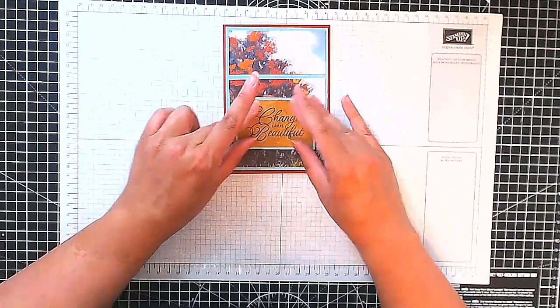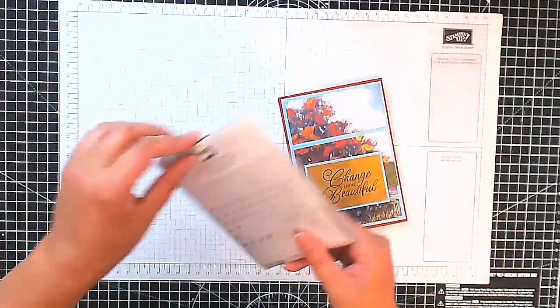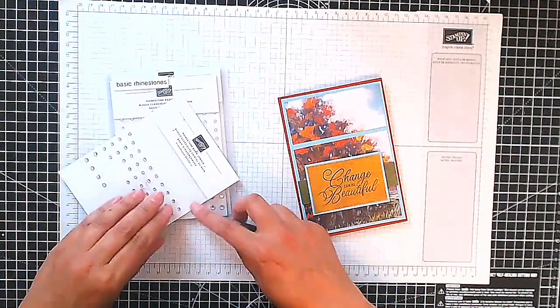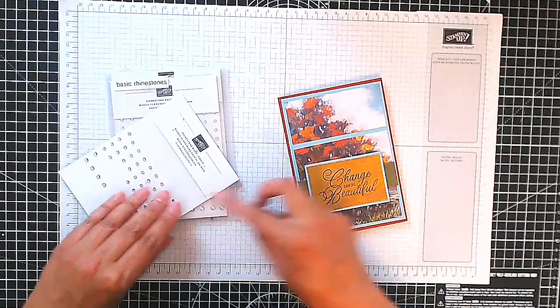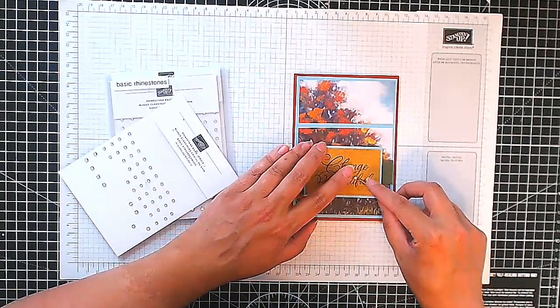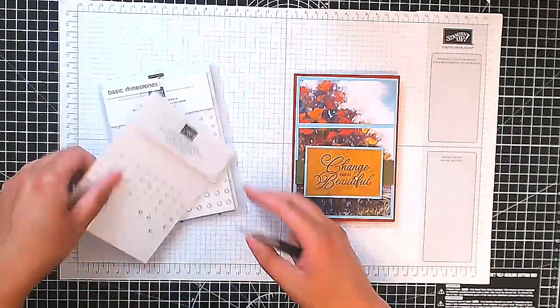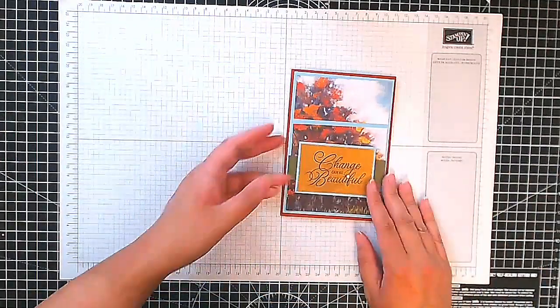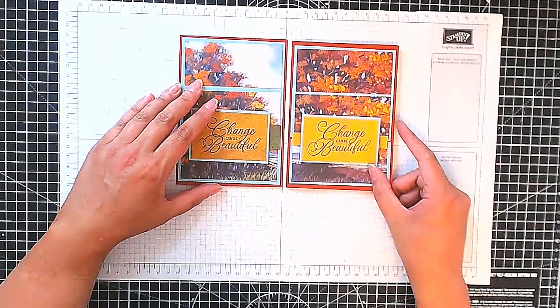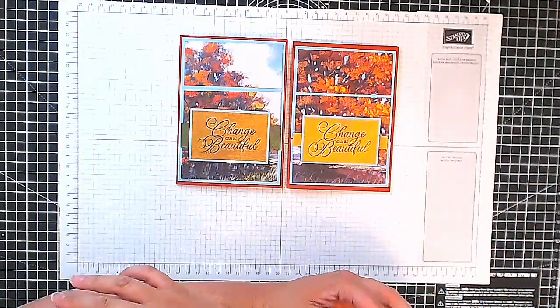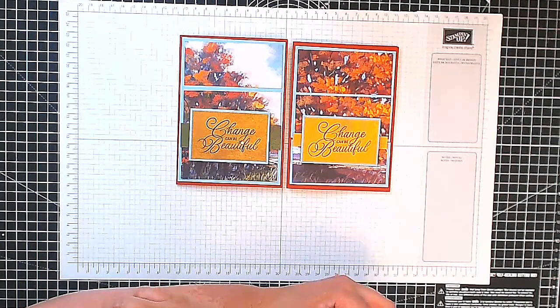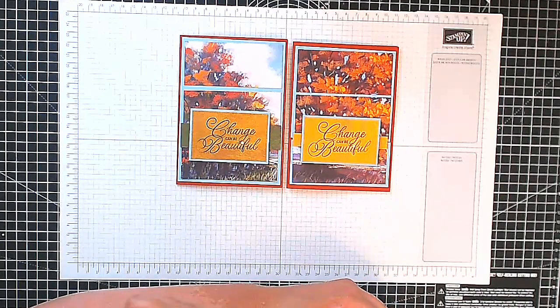So there we go. Finishing touches. I'm going to use some rhinestones. And I'm just going to take one of these. And I'm just going to put it on the dot of the i of beautiful. And there we have our two cards. Two different patterns of paper. Same style. I hope you like them. If you did I'd be grateful if you could give it a thumbs up. So thank you again. Until next time. Enjoy being creative. Bye.